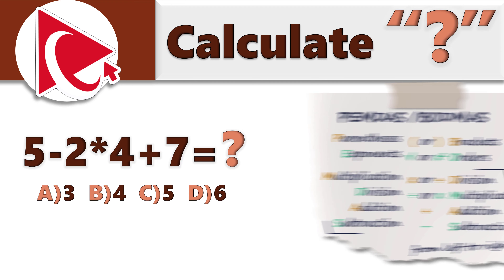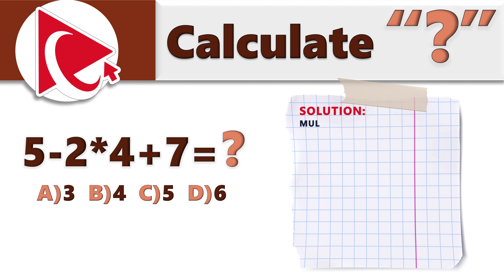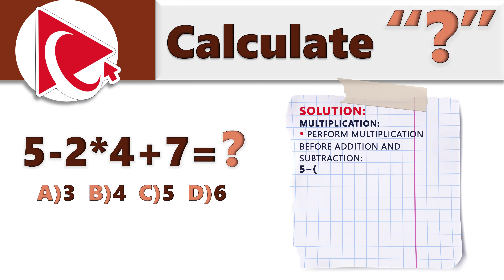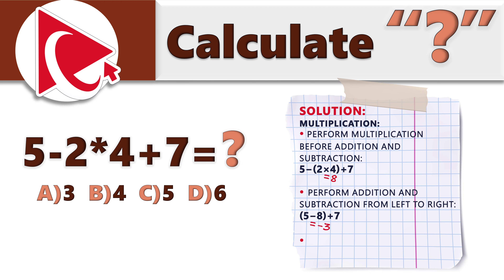Let's apply this order to this expression. We first need to do multiplication: 2 multiplied by 4 equals 8. So the updated expression will be 5 minus 8 plus 7. The next operation, from left to right, is subtraction: 5 minus 8 equals minus 3.